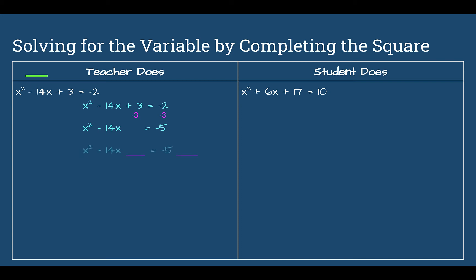Draw our blanks in. Half of 14 is 7, so negative 7 to the second power is positive 49. Add 49 to both sides. Note: the number you add to both sides is always positive — even if half of b is negative, squaring makes it positive. Factor the left and combine the right: x minus 7 to the second power equals 44.